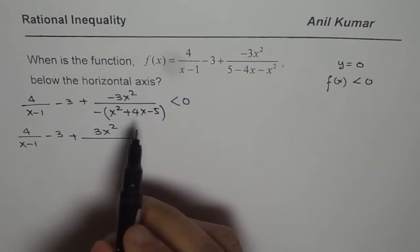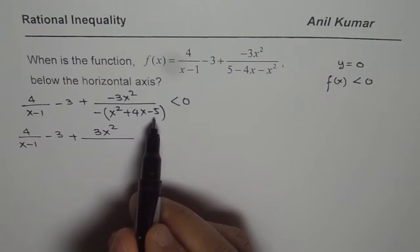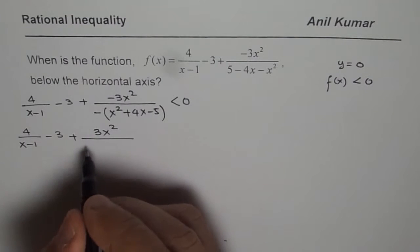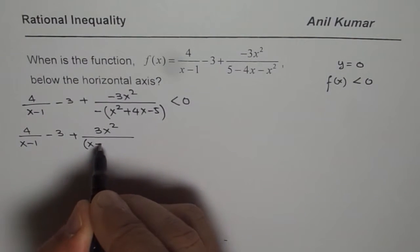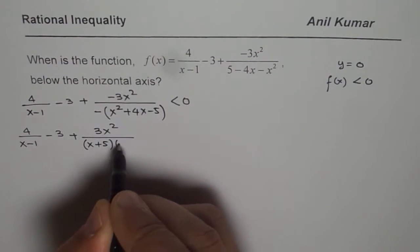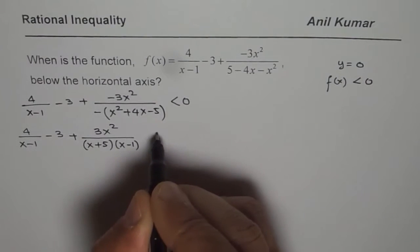Now in this factor, we need product of minus 5 and sum of 4. So we get x plus 5 times x minus 1, less than 0.